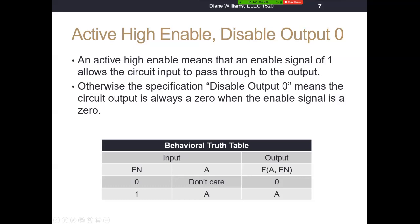Here's our behavioral truth table. We have two inputs: enable and A. Active high enable means whenever enable is a one, whatever's sitting on A will flow through to the output. But when enable is a zero, we don't care what's on A. We specified that the disable output is a fixed value of zero. So that's our behavioral truth table.